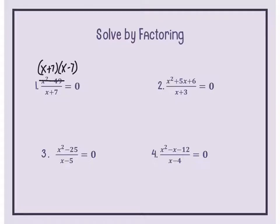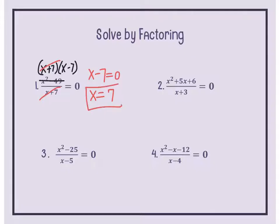If you have a common factor in the numerator and denominator, x plus 7 divided by x plus 7 equals 1. All you have left is x minus 7 equals 0. To solve for x, add 7 to both sides, so x equals positive 7. If you plug it back in and check, 7 works.